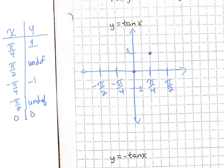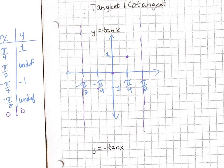At pi over 4, we're at one, and at pi over 2, if it's undefined, what that's telling us is that there's an asymptote. We know with asymptotes that the graph is approaching and getting closer and closer to that line, just never touching it. At negative pi over 4, we have the point negative one, and then at negative pi over 2, we've got this asymptote again. I tend to draw from the origin up through that point and then up towards the asymptote, and then through this point and down towards that asymptote in the other direction.